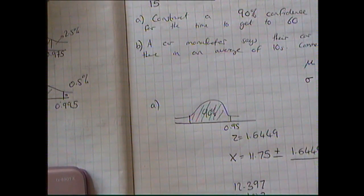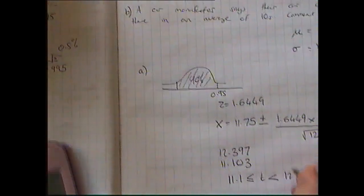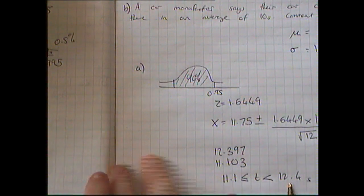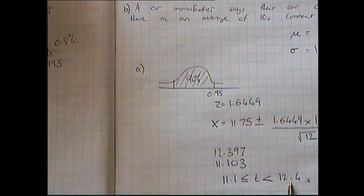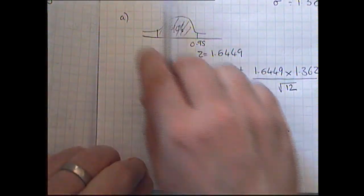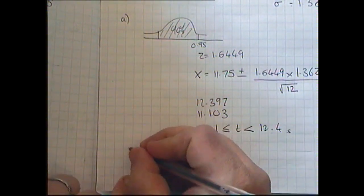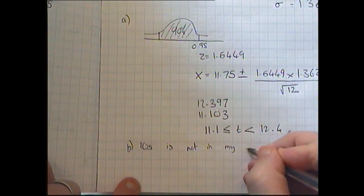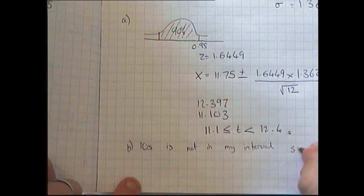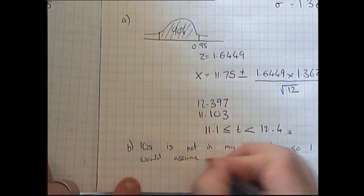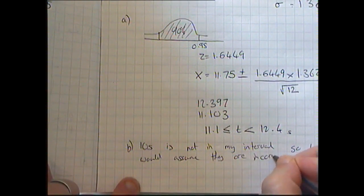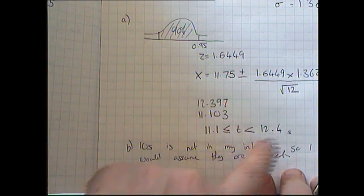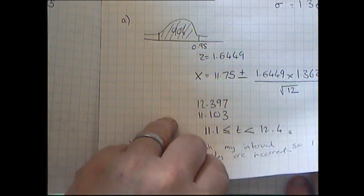Changing the addition to a subtraction gives me 11.103. Rounding to one decimal place, my confidence interval is 11.1 ≤ time < 12.4 seconds. I am 90% confident that the mean time for all cars is between 11.1 and 12.4 seconds. A car manufacturer claiming an average of 10 seconds — since 10 is below my interval, there's only a 5% chance of that, so I would say they are incorrect.